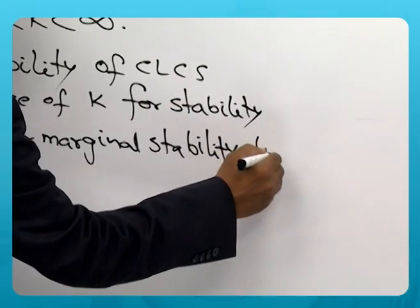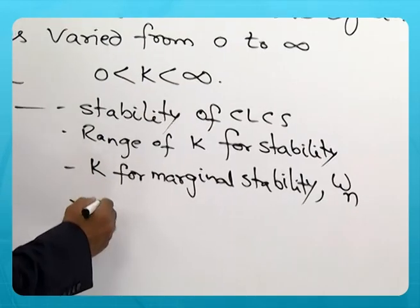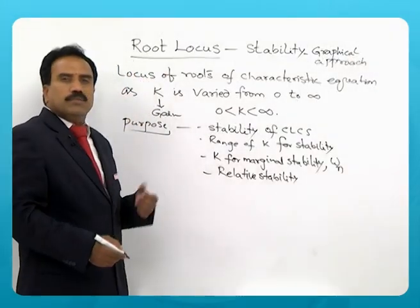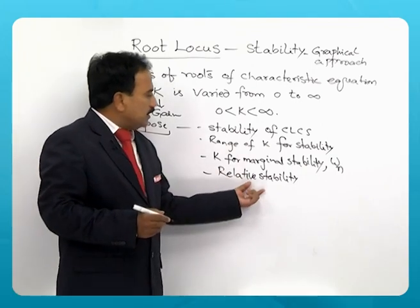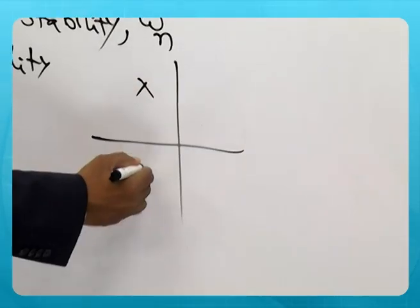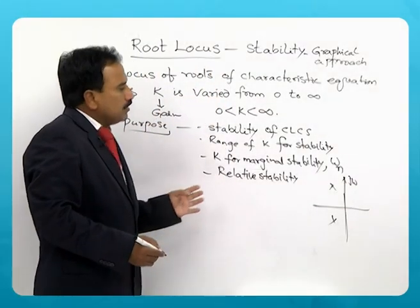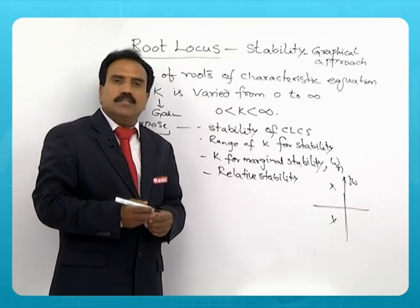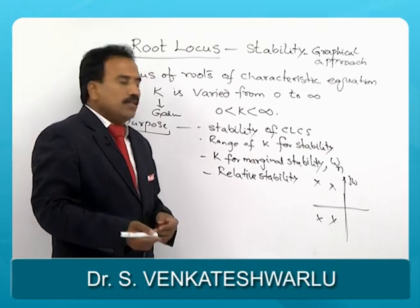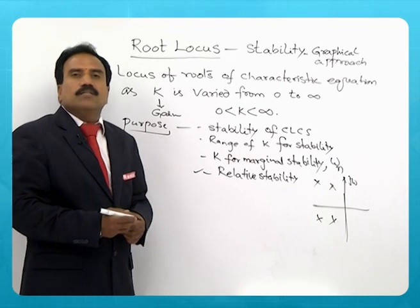From the root locus you can also find out the undamped natural frequency of the system. Most importantly, relative stability can be determined from the root locus. The meaning of relative stability is: if there are poles in the s-plane, how close or how far those poles are to the imaginary axis. If the poles are very close to the j-omega axis, the system is relatively less stable; if they are far from the imaginary axis, the system is relatively more stable.